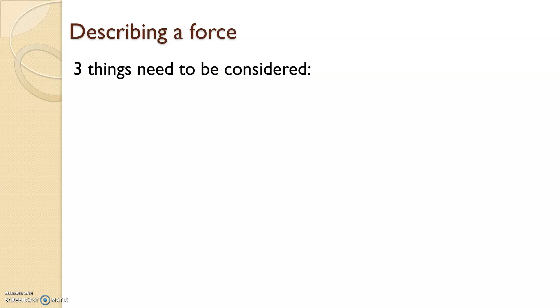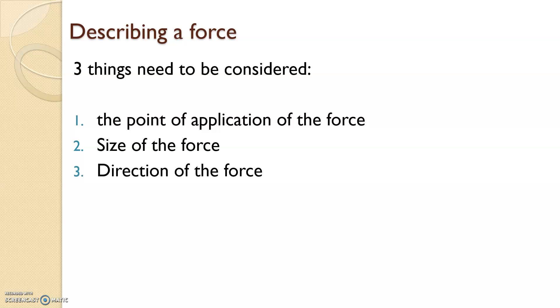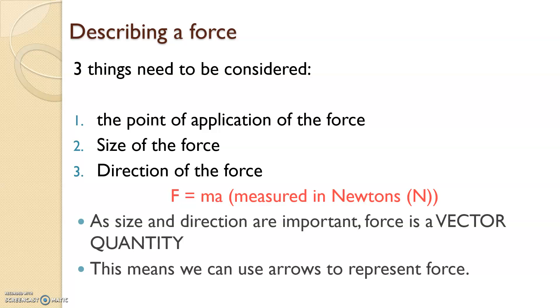Force needs to identify three things particularly for our free body diagrams: point of application of the force, i.e. where the contact point is occurring, the size of the force or magnitude, and direction of that force. Force is mass times acceleration, measured in Newtons. It is a vector quantity because you're given a magnitude and a direction. However, scalar, for example gravity, is just a magnitude, just tells you the size of that force. We use arrows to represent force. The longer the arrow, the greater the force.